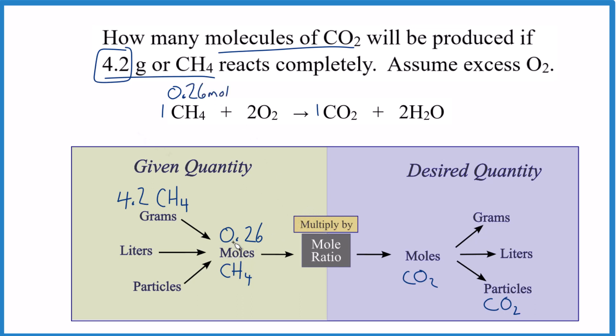And we want to know how many moles of CO2 we end up with. We can see that the ratio is 1 to 1. So for every 1 mole of CH4, we get 1 mole of CO2. So for every 0.26 moles, we'll get 0.26 moles. It's a 1 to 1 ratio. So we've used our mole ratio here to figure out how many moles we have.